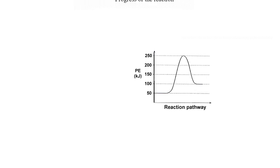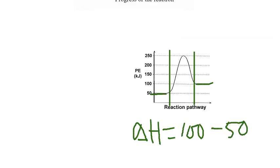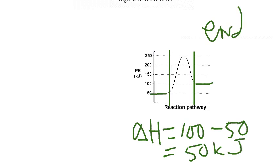How do I know that? Look at where I'm starting and where I'm ending. It might be easier if you break up your potential energy diagram into thirds. Where I'm starting is at 50, and I'm ending at 100. My delta H is final minus initial or products minus reactants, 100 minus 50, which would be 50 kilojoules in this case. And it's a positive value. This is an endothermic reaction.